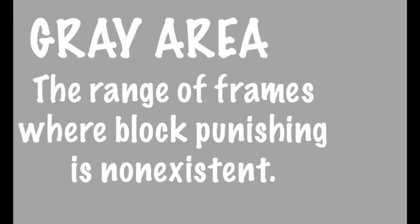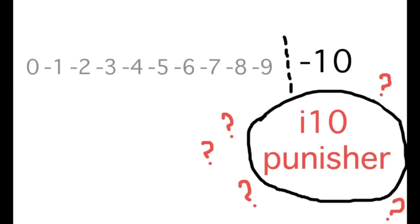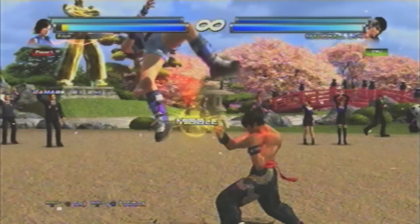The gray area refers to the range of frames where block punishing is non-existent. Because the fastest generic block punisher is 10 frames, the gray area is therefore having frame advantage or disadvantage from minus 9 to plus 9. In this gray area, both players cannot punish each other, but they can however sidewalk each other. This leads to a whole new world of mind games, because now you're not just worrying about trades, counter hits, punishes, and grabs — you have to worry about being sidestepped and launched.